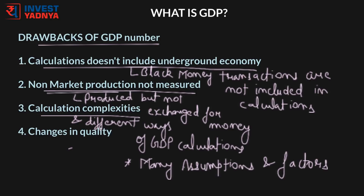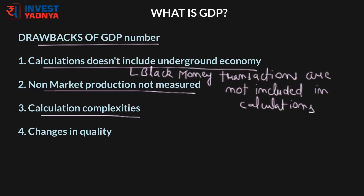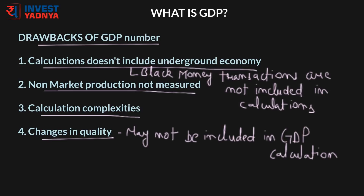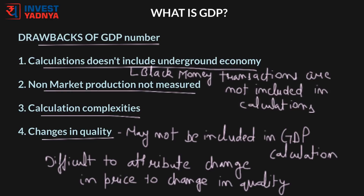Another tricky part of the calculation is adjusting for inflation and finding the GDP deflator, which we will discuss in detail in upcoming videos. Changes in the quality of a product may not be fully captured in GDP calculations. For example, this year's smartphone might cost more than last year's, but it will also do more. It is difficult for statisticians to attribute the change in price to a change in quality, so inflation's impact is sometimes overstated. This becomes even more difficult in services — the price of a haircut may have increased not just due to inflation but also due to better service provided by the barber, which is almost impossible for a statistician to determine.